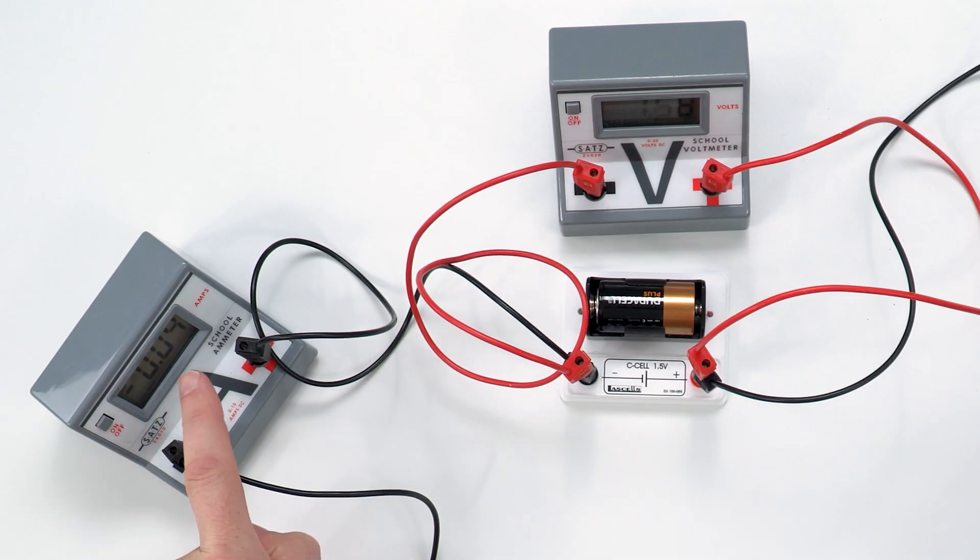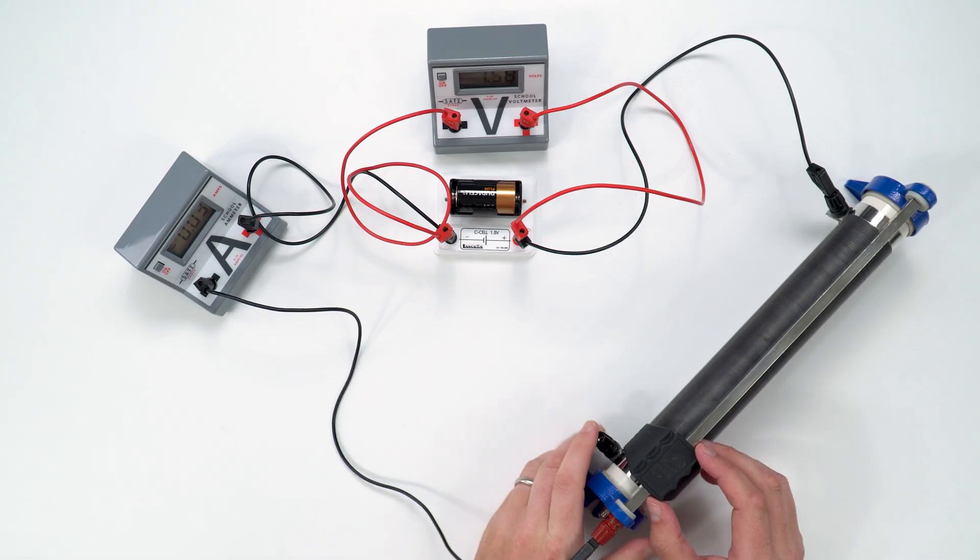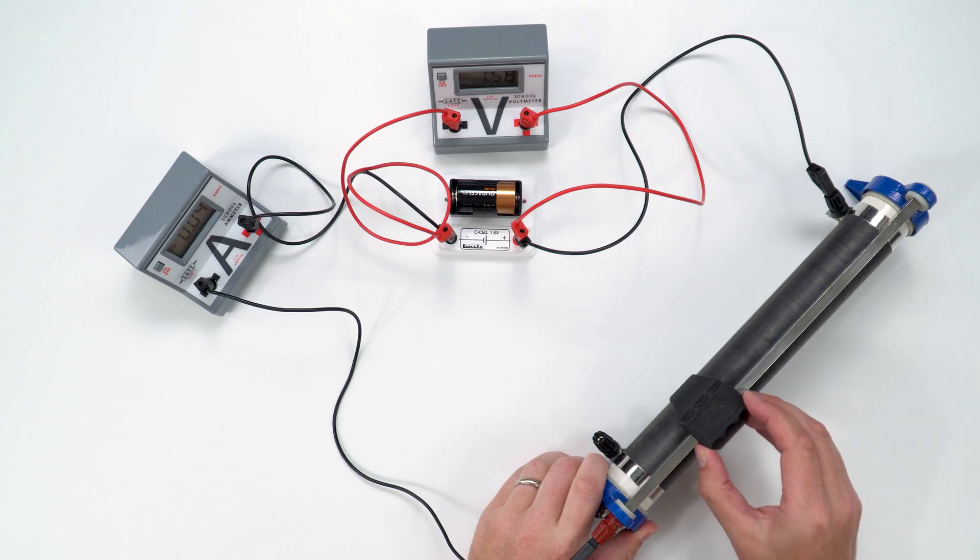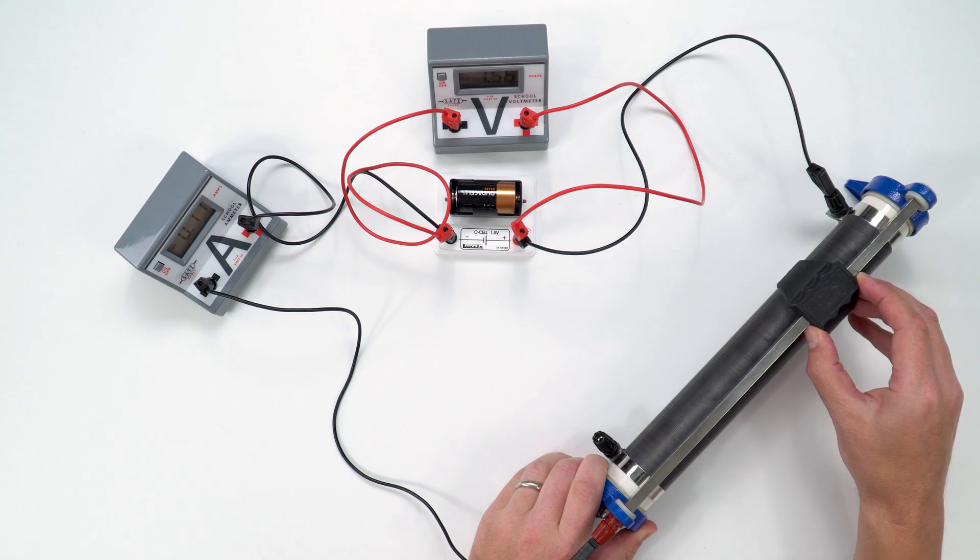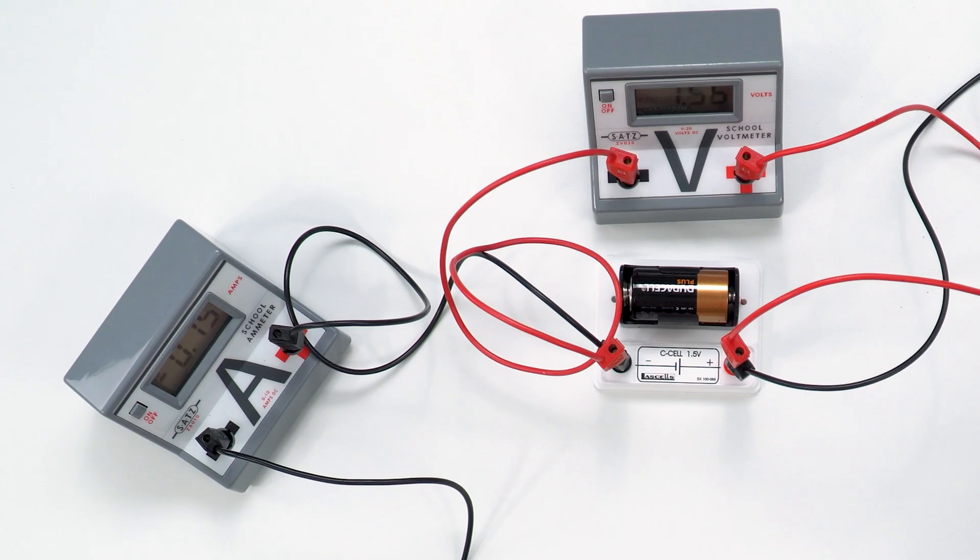But as we have a lower resistance in the external part of that circuit, what we find is that the value of the terminal PD goes down when we have a higher value of current which is moving through